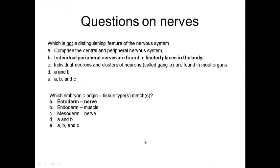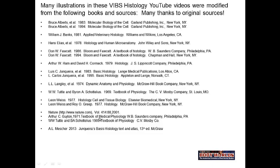A couple of questions: which is NOT a distinguishing feature of the nervous system? Comprises central and peripheral nervous system — yes. Individual neurons and clusters of neural ganglia are found in most organs — yes. Individual peripheral nerves are found in limited places of the body — no, they're found all over the body. So the answer is B, not a distinguishing feature. Next: which embryological origin tissue matches? Ectoderm/nerve — yes. Endoderm/muscle — no, it's mesoderm. Mesoderm/nerve — no, it's ectoderm. So the answer is A.